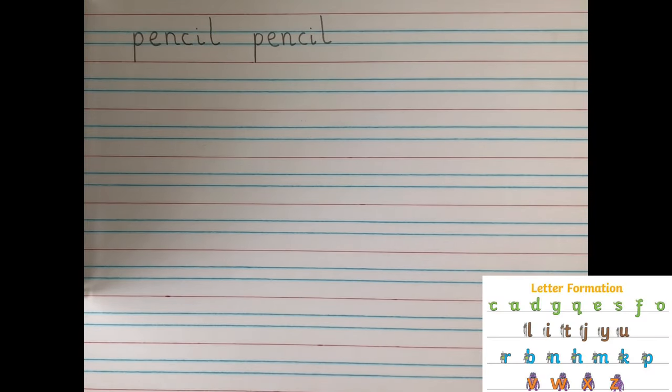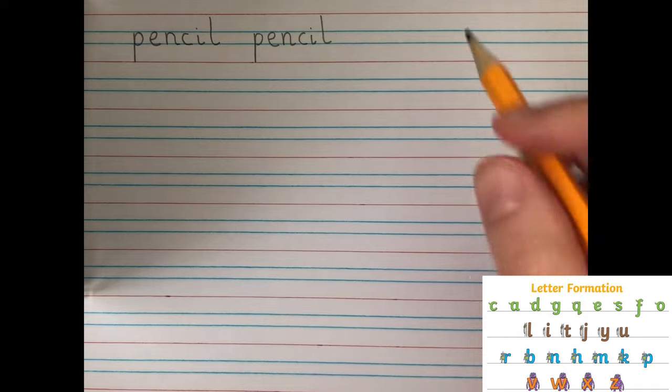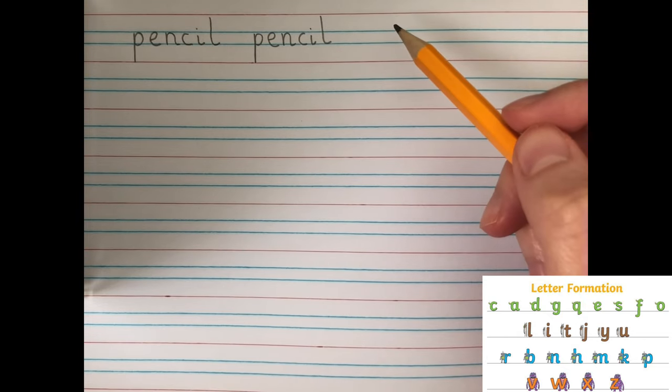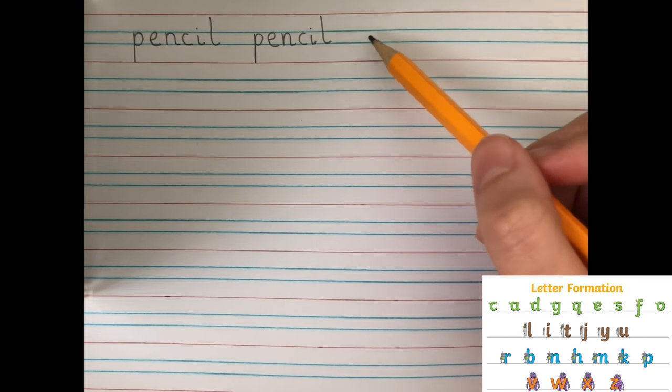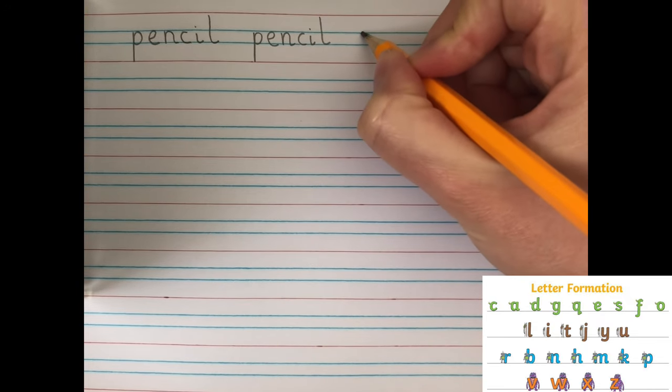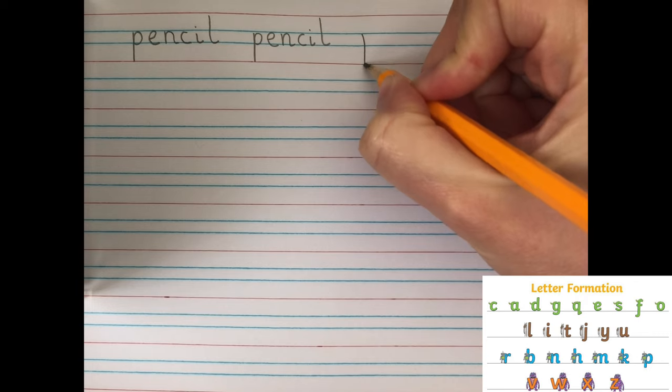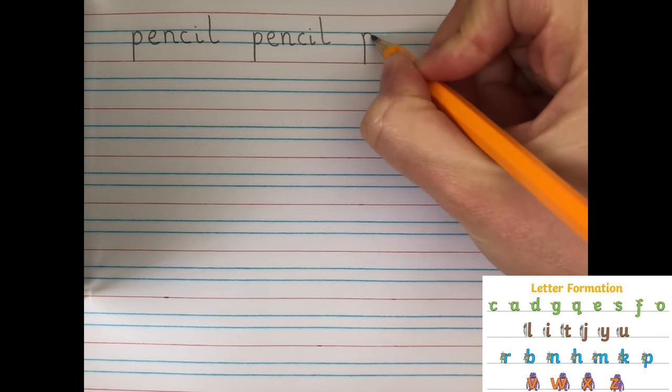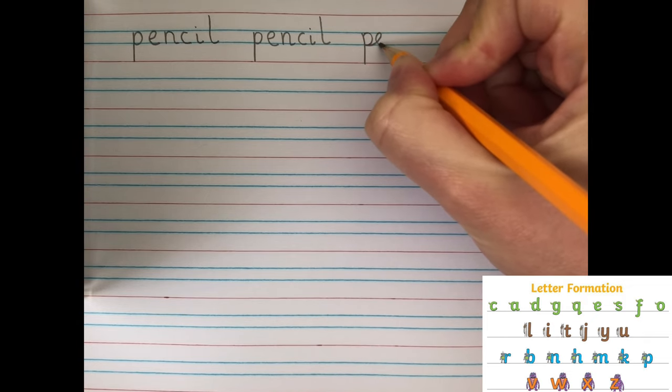Now, we're going to try joining them. Now, obviously, this is very tricky, and it's something we practice lots and lots in year two, so don't worry if you find this difficult, but let's give it a go anyway. So, again, I've got my one-armed robot P, but instead of taking my pencil off the paper, I'm going to keep it on and join it to that E.